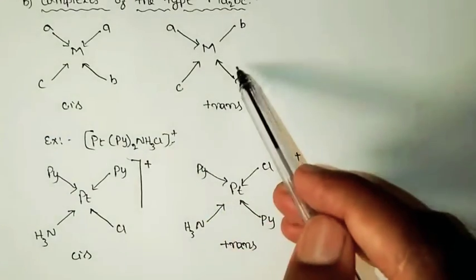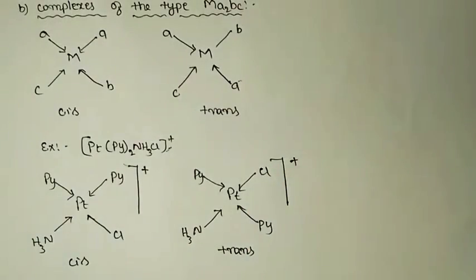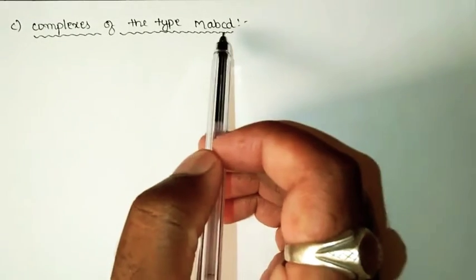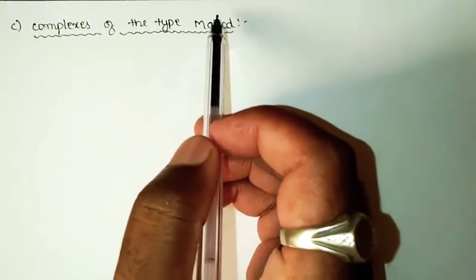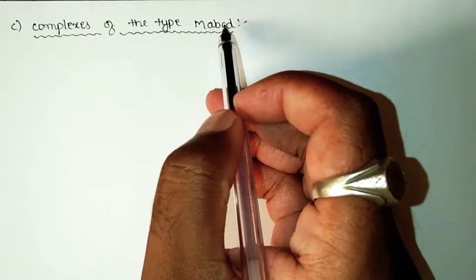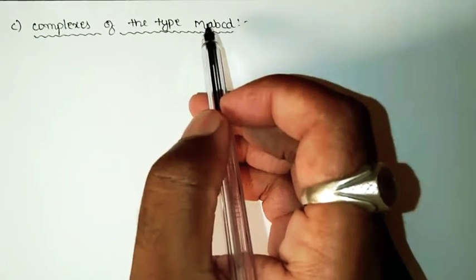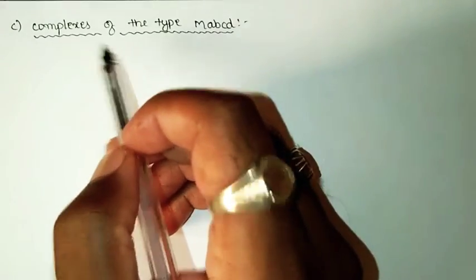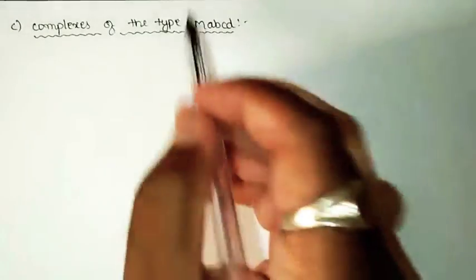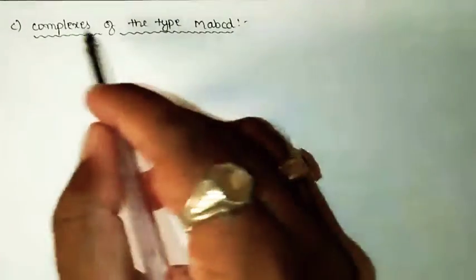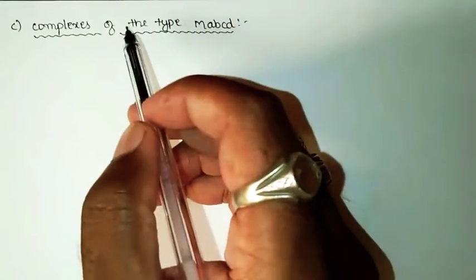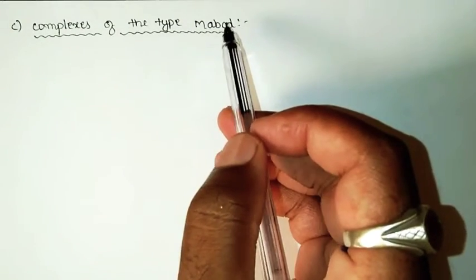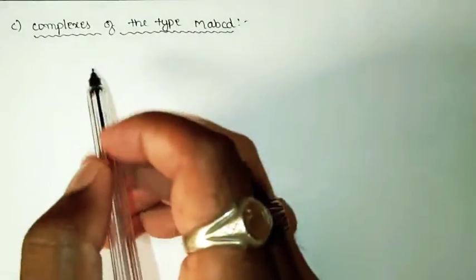For square planar complexes of the type MABCD where all four ligands are different, three possible isomeric structures are available. To obtain the cis and trans configurations, we fix one ligand and rotate the remaining ligands at the trans position. By observing the position of the fixed ligand relative to the others, we can determine whether the arrangement is cis or trans.